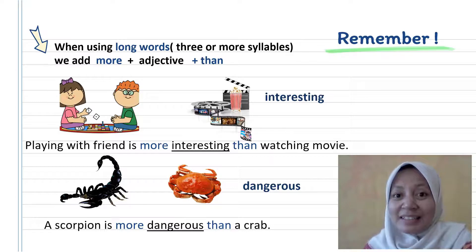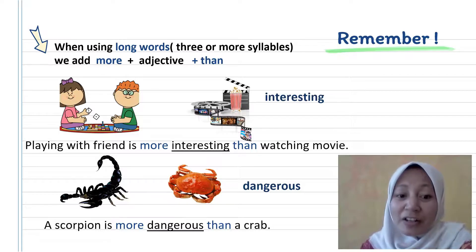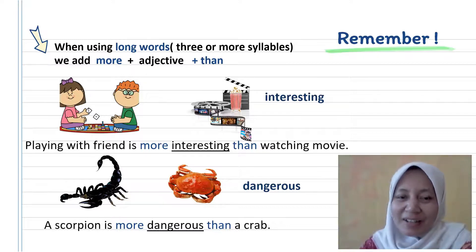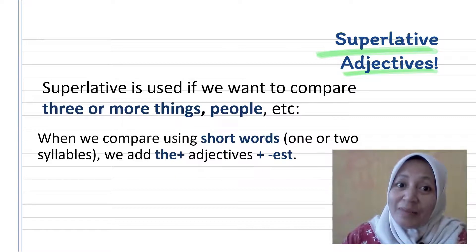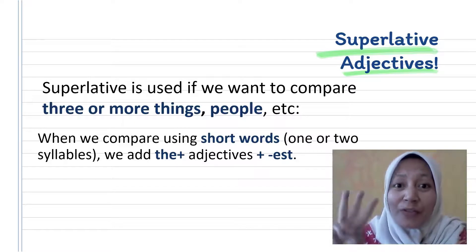Second example: 'dangerous' — say and clap — has three syllables. We have a picture of a crab and a scorpion. The sentence is: 'A scorpion is more dangerous than a crab.' Now, about superlative adjectives: we use superlative adjectives when we want to compare three or more things.